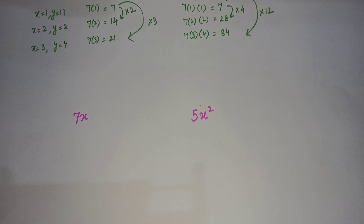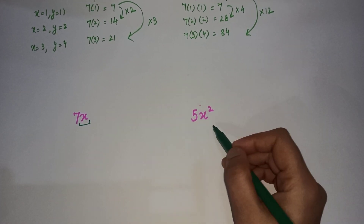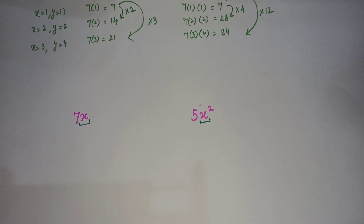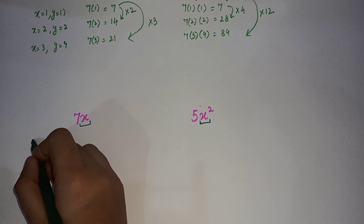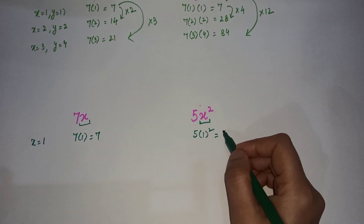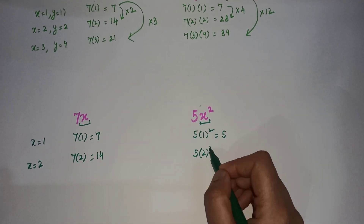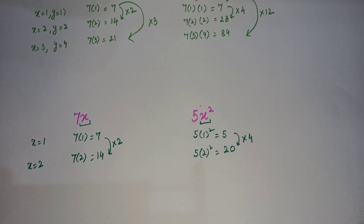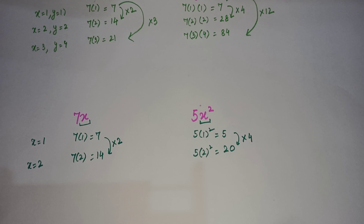Now let's look at the other two terms: 7x and 7x squared. These are also not like terms because the variable part is different — x versus x squared. So they are going to be unlike terms. Let's see once how they are growing: they are not growing in a similar way because their variable part is different.